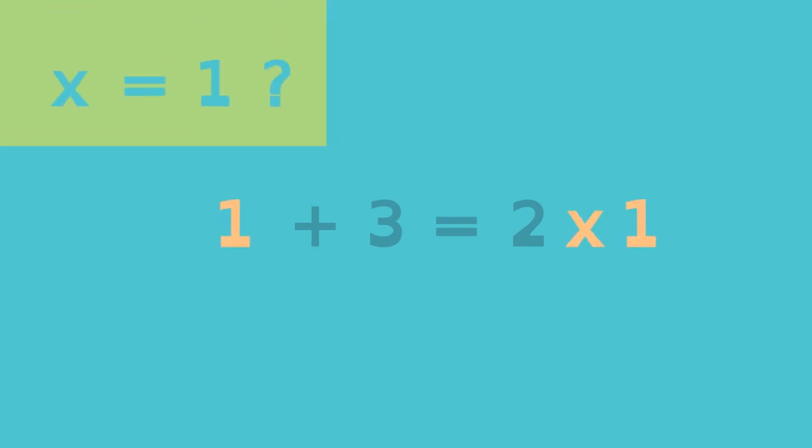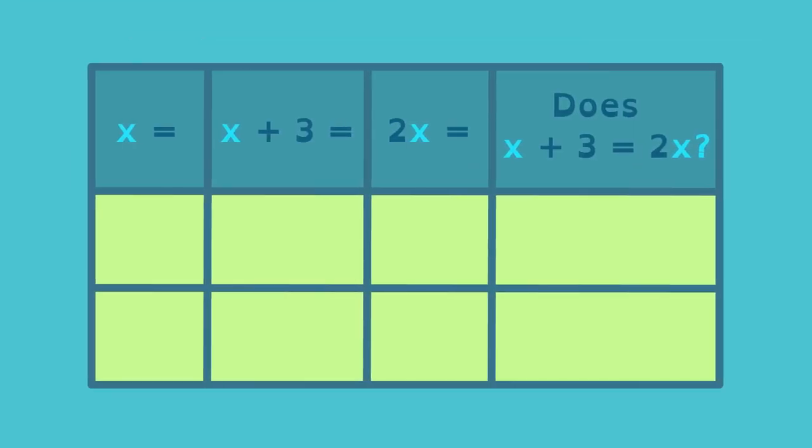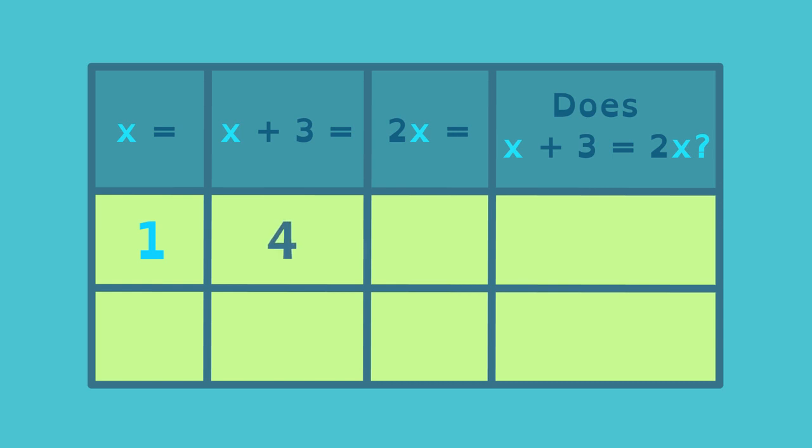If x is 1, then that's like saying 4 equals 2. Not true! x equals 1 is not a solution to this linear equation.